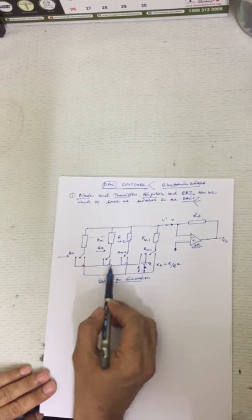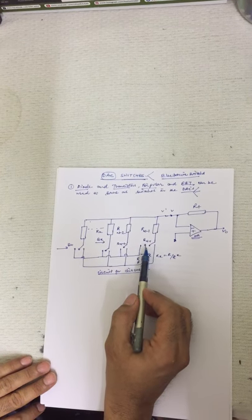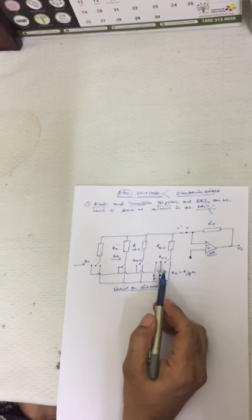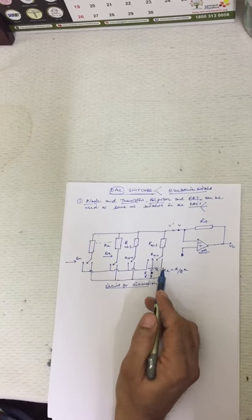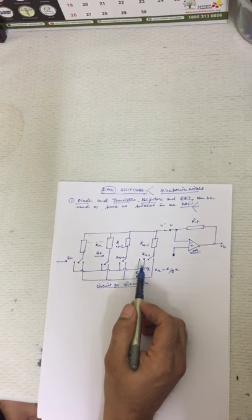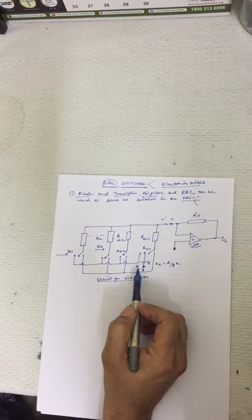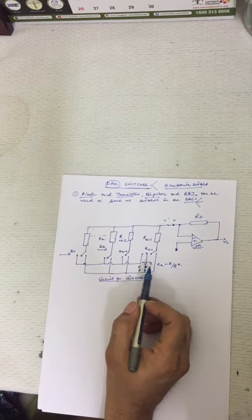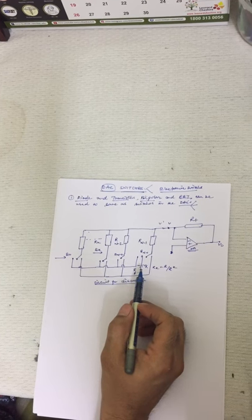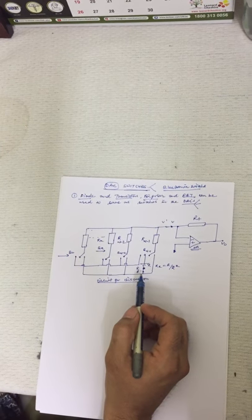When turned on, FETs behave like simple resistors. But when such devices are used, either the resistor in the converter array must be ignored, or the resistance of the FET must be taken into consideration. If FET resistance is taken into account, it is necessary to provide some measure of temperature compensation, since FET resistance is temperature dependent.